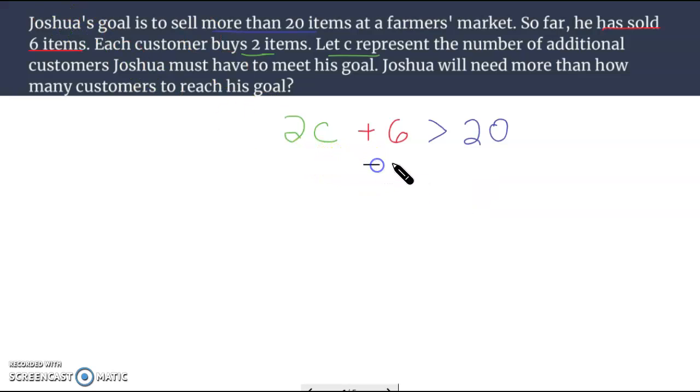Let's go about solving this. First we're going to take away 6. 20 minus 6 is 14. We're going to divide the 2 away on both sides. 14 divided by 2 is 7. So the number of customers Joshua needs to meet his goal is 7. He needs greater than 7 customers.